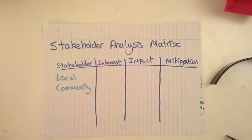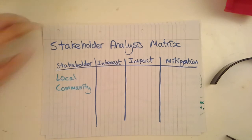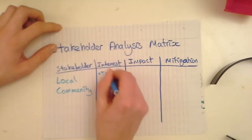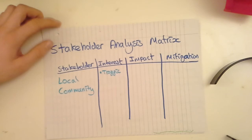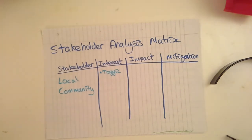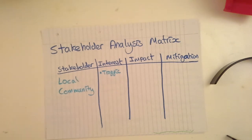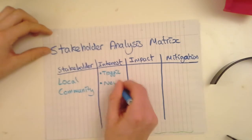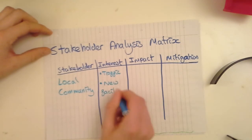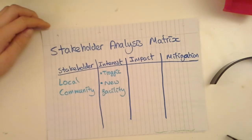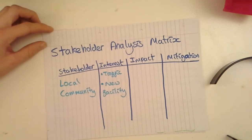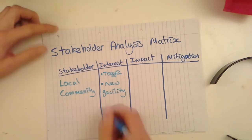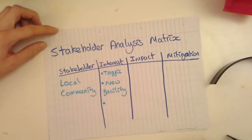Why do they have an interest in this project? Well, we're going to have lots of traffic, maybe a lot more people visiting the area. During construction there's going to be lots of lorries and perhaps road blocks. Once it's finished, they can go and watch the game if they want, so they've got a new facility. We've also got perhaps noise and light pollution, similar to the supermarket example. We might be building really late at night and that's going to disturb families.